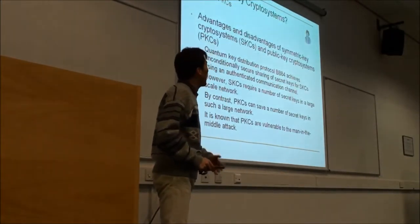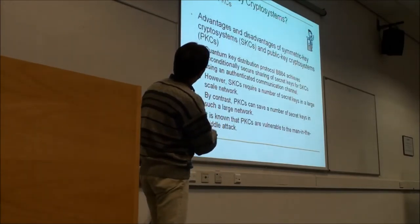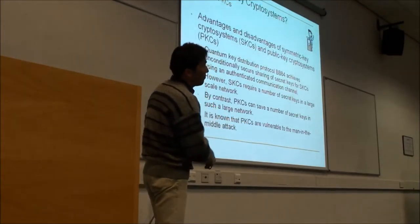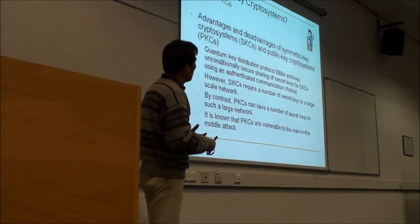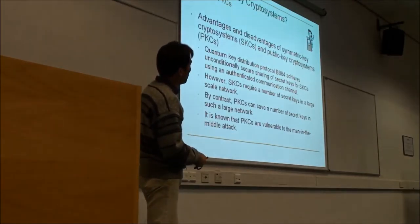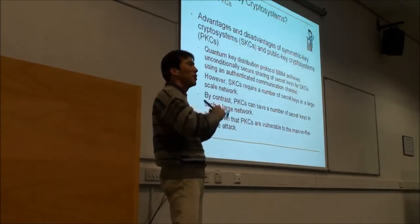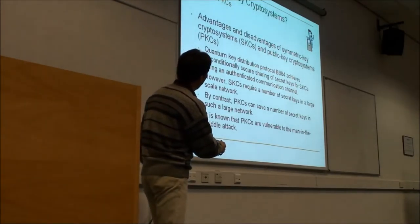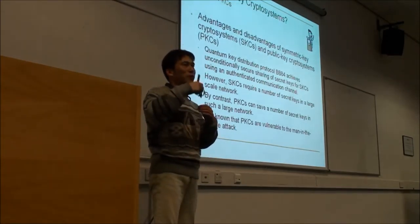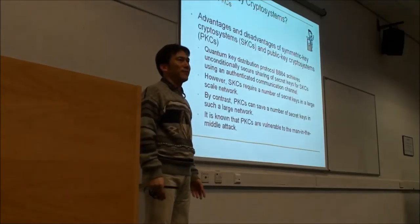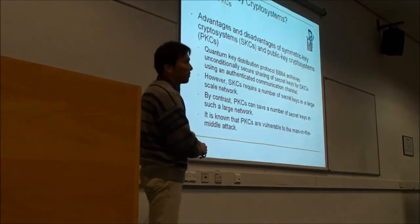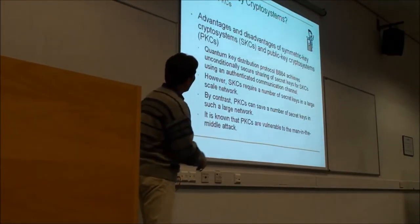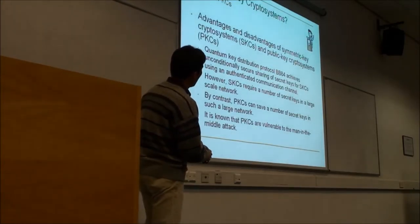Why do we need public key cryptosystems instead of private or symmetric key ones? One big reason is that in a symmetric key system, we have to produce each key for each communication. In a large-scale network, you have to produce tons of secret keys to distribute to each person — that's really uneconomical. But with a public key cryptosystem, you can produce one key and send it to everyone, using just a single key for encryption and one decryption key — two keys are enough to operate even in a large-scale network.